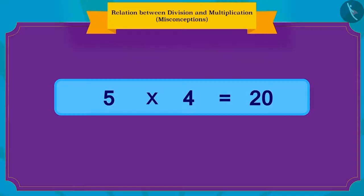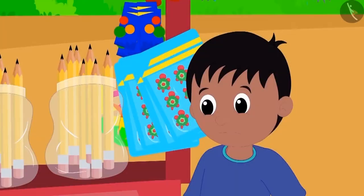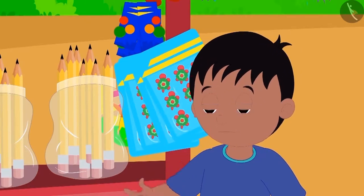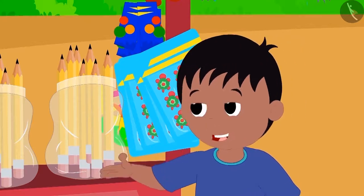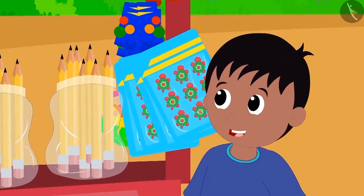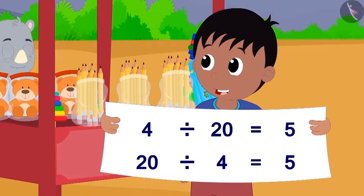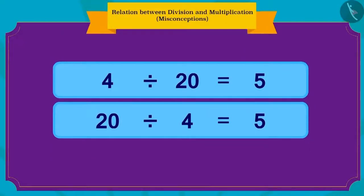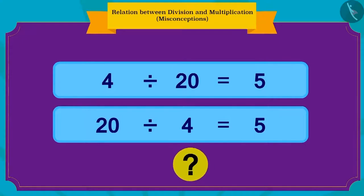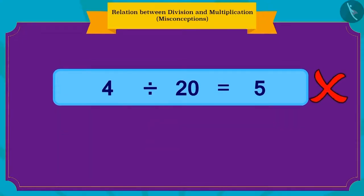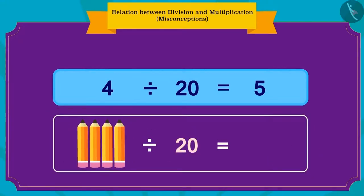Then Raju thought that he can also write division in two ways because of the relation between division and multiplication. Therefore, after writing division like this, he happily told Bablu that he had become an expert in maths. Children, is the division written by Raju correct? No, what Raju has written is wrong. But why is it wrong? Because here, Raju is dividing 4 pencils by 20 rupees, and is this even possible? Not at all — this is not possible.